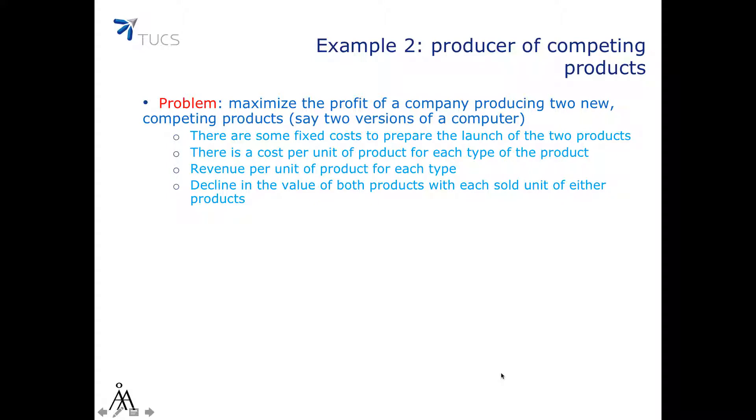Here is another example. Let's say that we have to maximize the profit of a company producing two new competing products, say something like two versions of a computer. There are some fixed costs to prepare the launch of the two products, and there is also a cost per unit of product for each type of the product. There is also some revenue per unit of product for each type, but there is also a decline in the value of both products with each sold unit of either product.